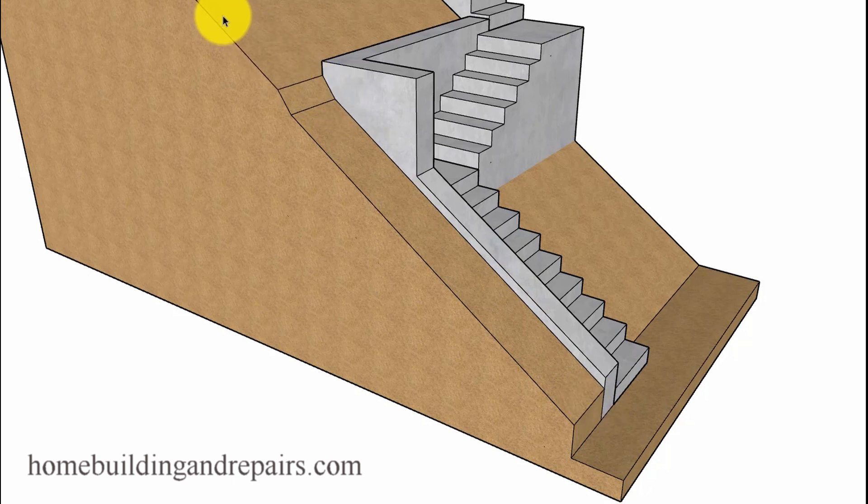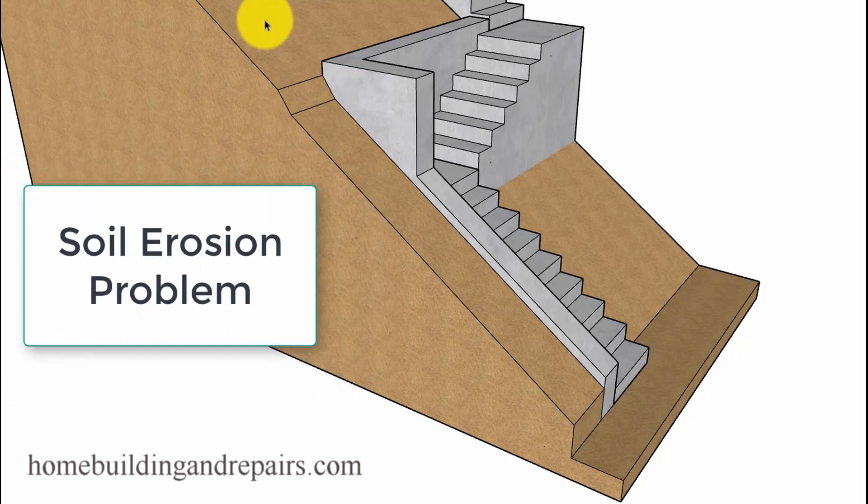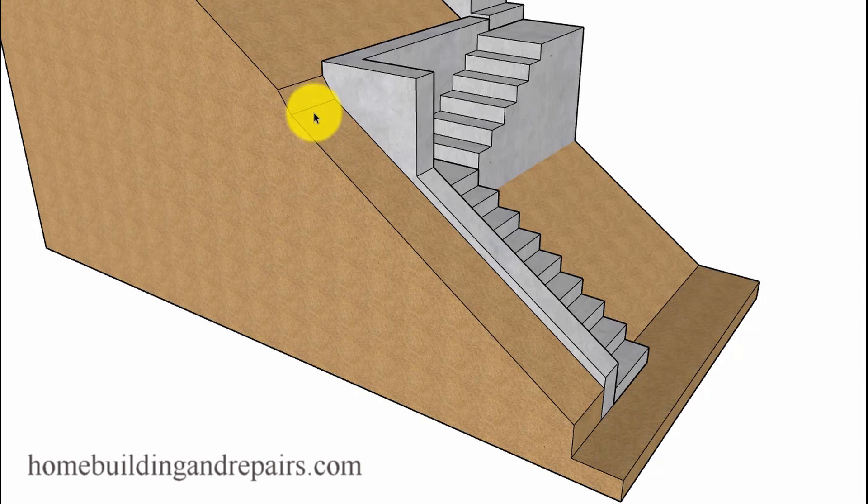If you have maybe a 35 degree angle or 40 degree angle and then it's got to drop down to a 50 degree angle and then back to a 35 degree angle, something like that, this could be a problem area here. Building a set of stairs on a hillside like this and making it safe is going to require more than one retaining wall most of the time.